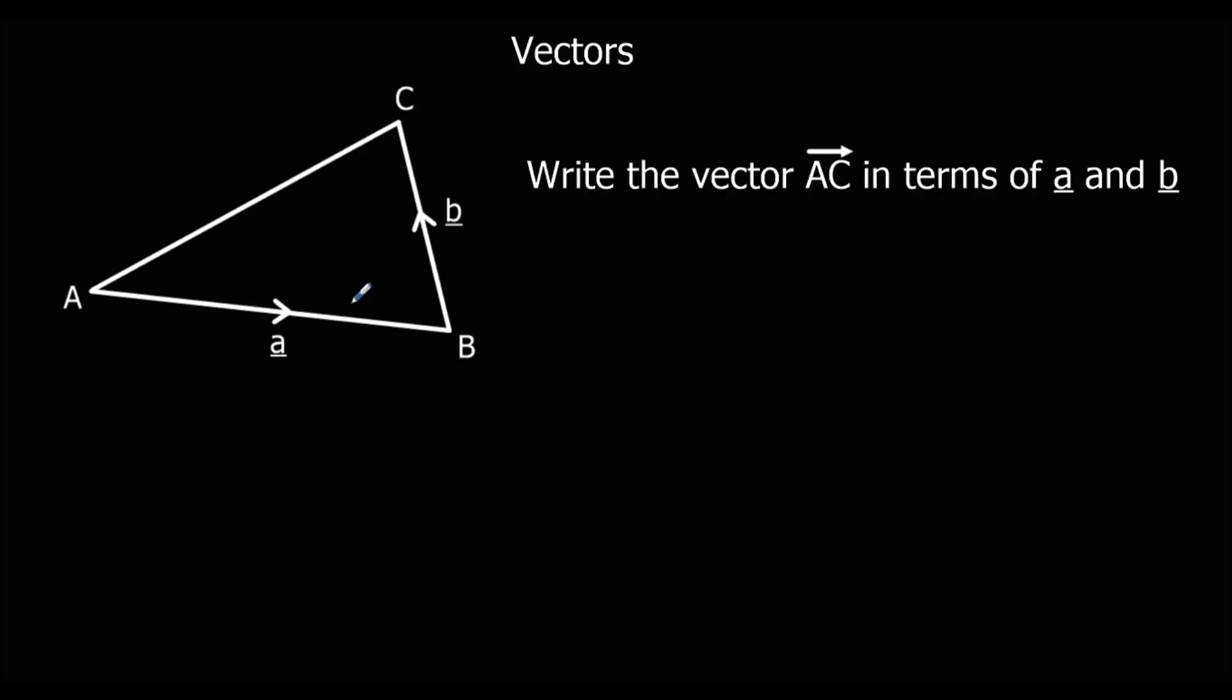So we've got a triangle here, and we are told that A to B, the movement from A to B, is called a. So from A to B is called a. If you wanted to go backwards from B to A, that would be minus a.